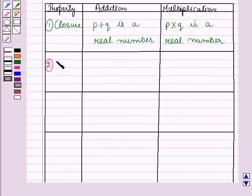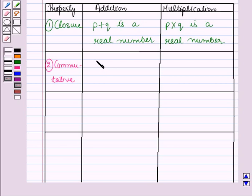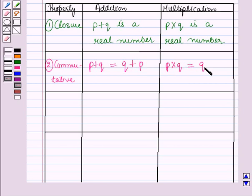The second property is the commutative property. The commutative property for addition is: if p and q are two real numbers, then p plus q is equal to q plus p. And for multiplication, it is p into q is equal to q into p.